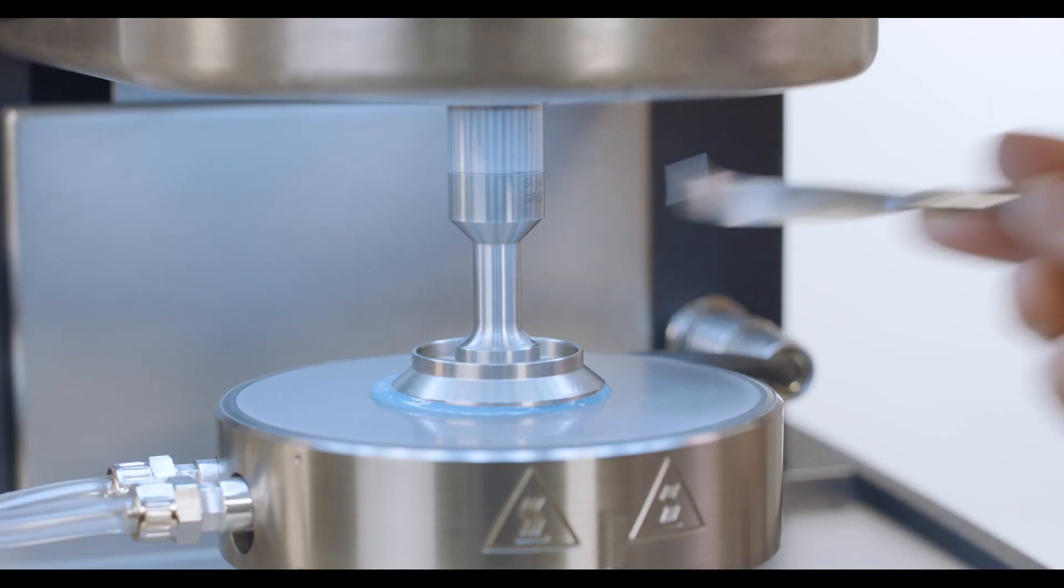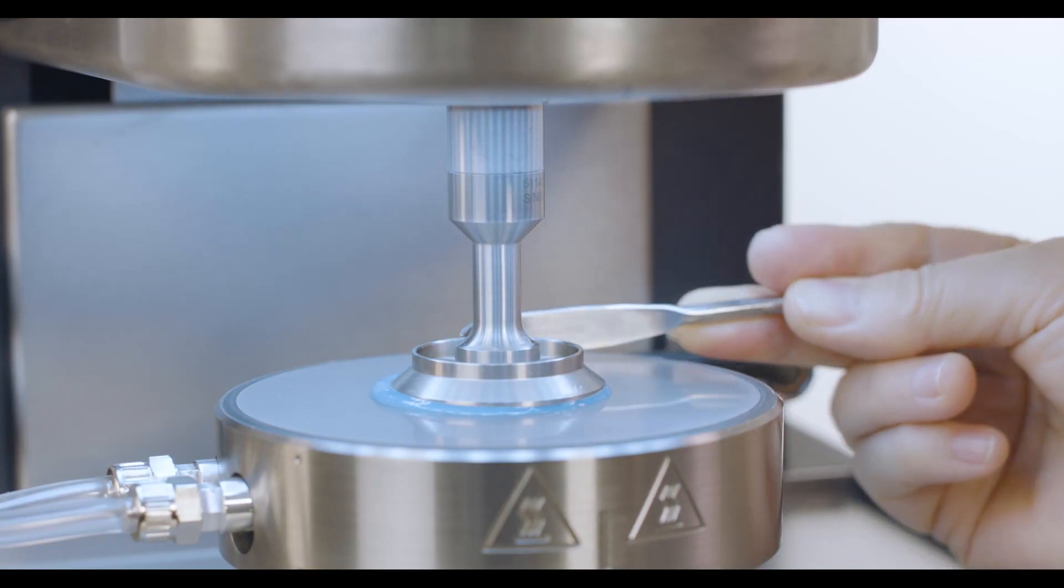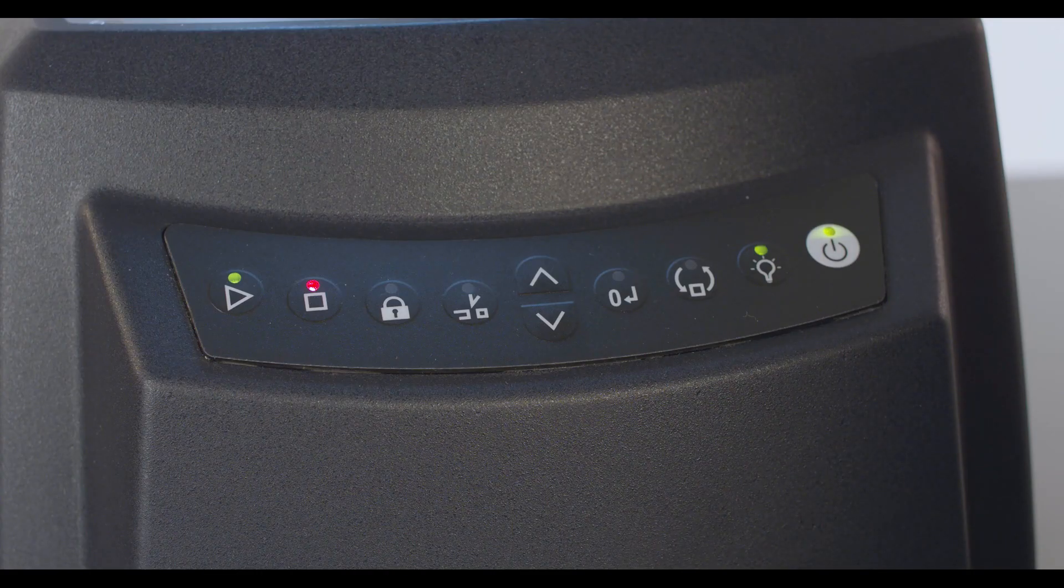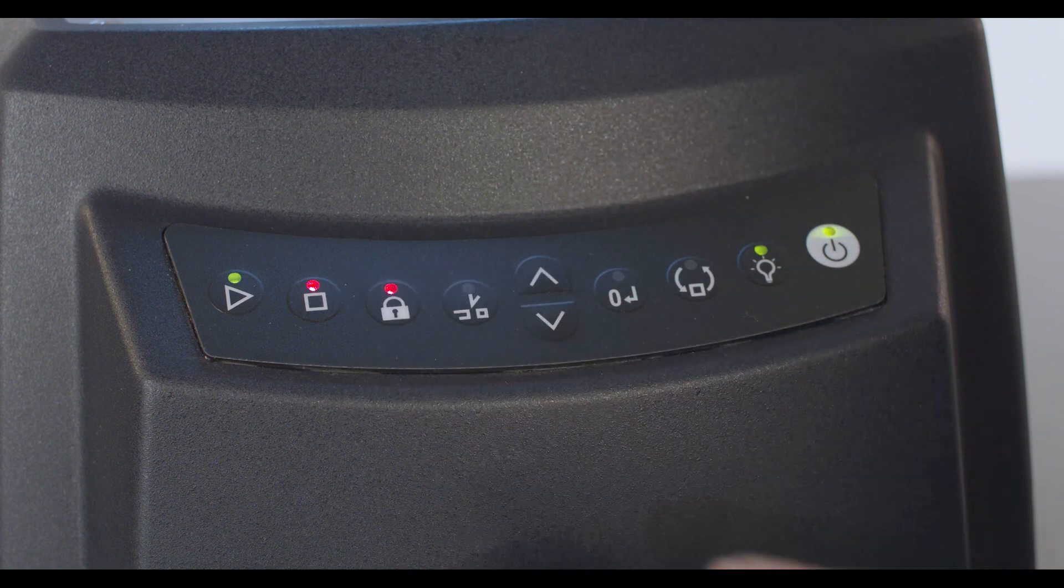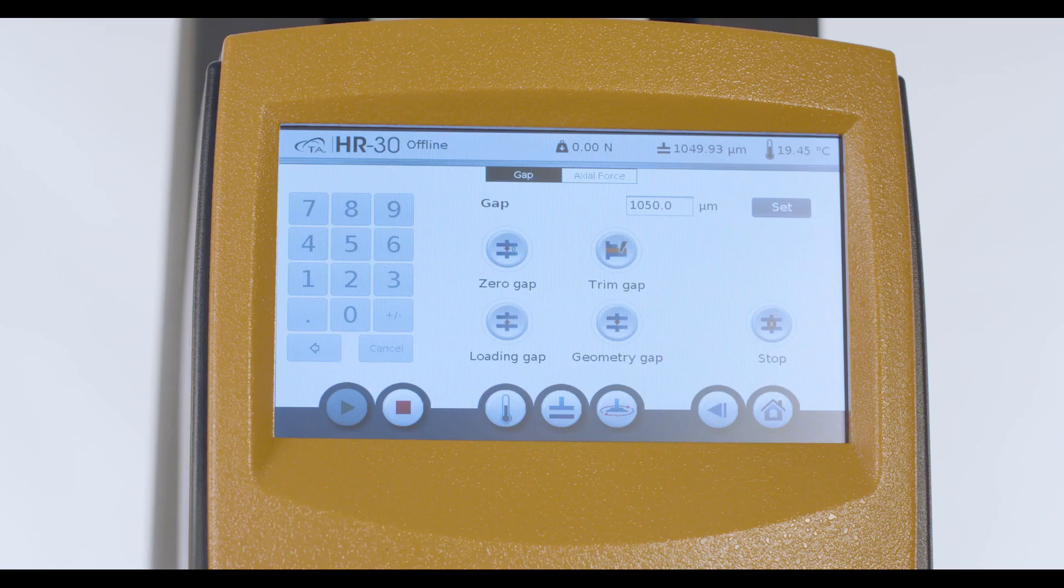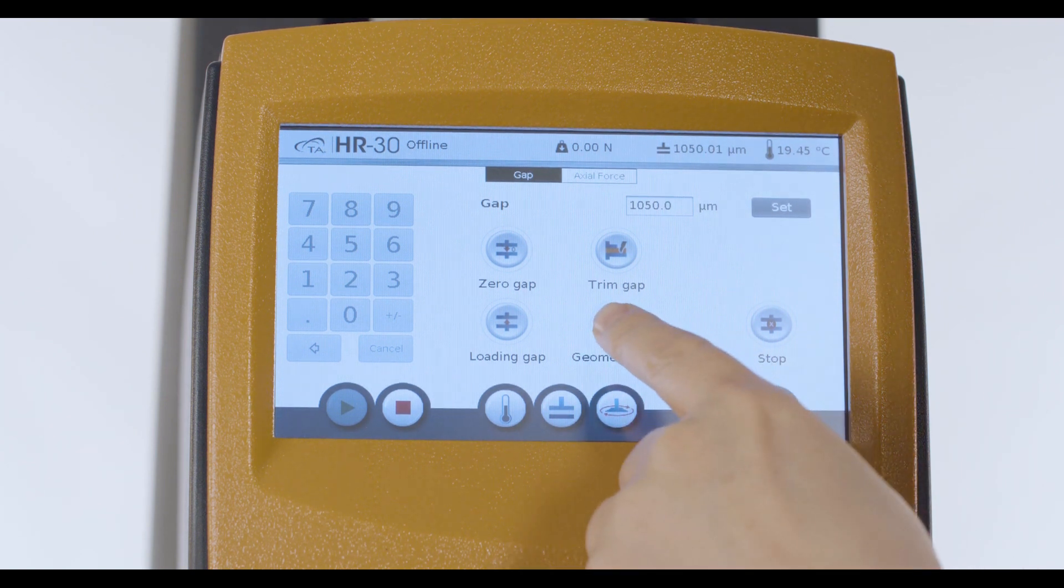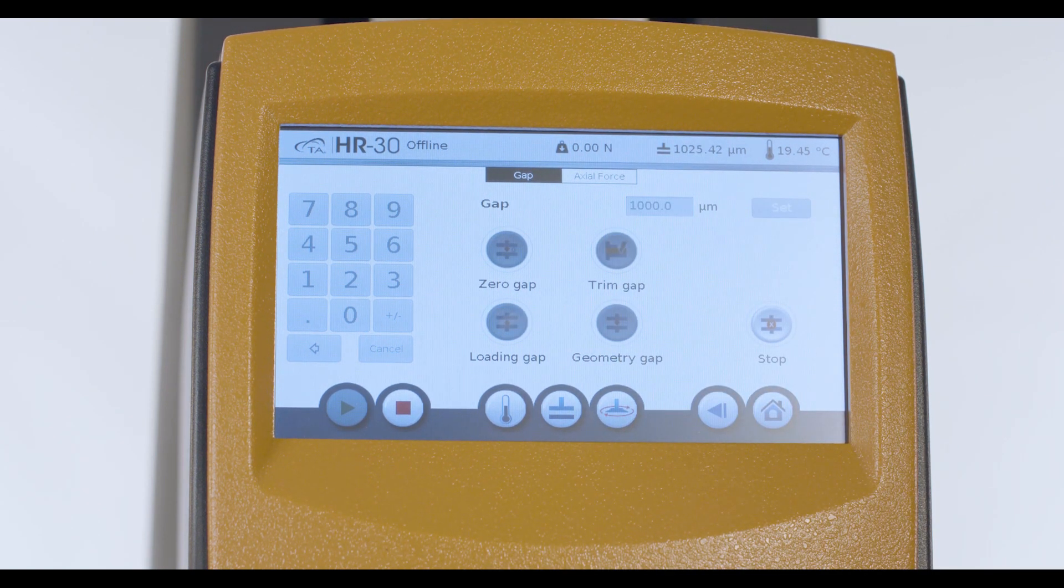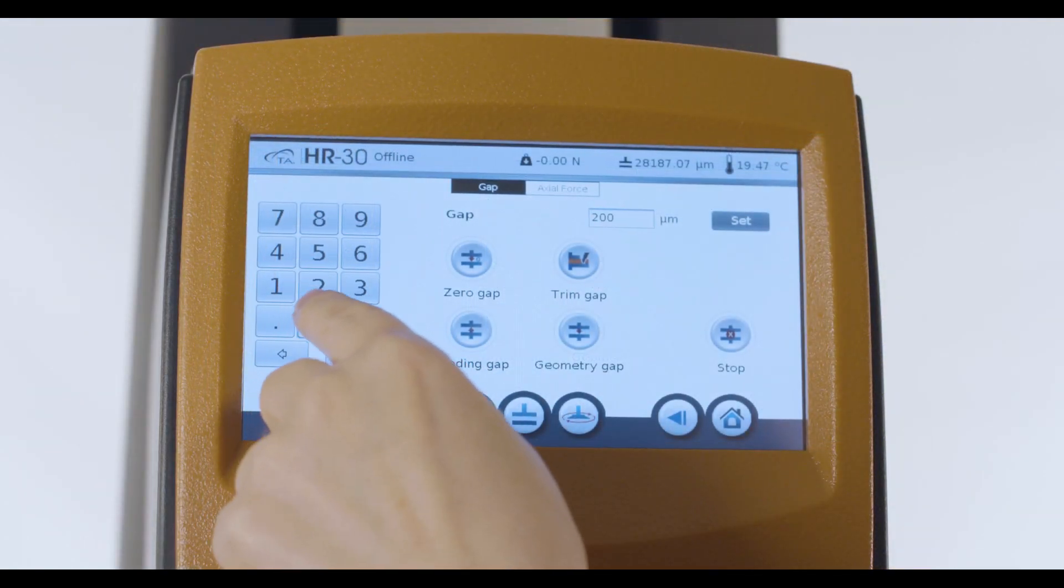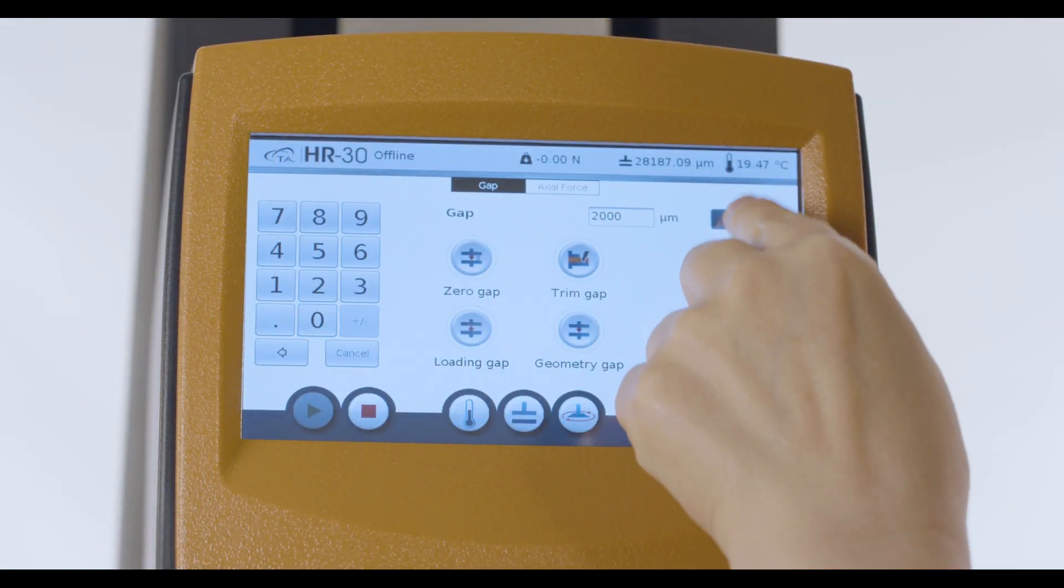Trim the excess amount of sample. To prevent the geometry from rotating during trimming, press this lock button from the instrument front panel. After trimming, use this button from the touch screen to go to the set measurement gap. You can also manually type in a target gap you wish to use.